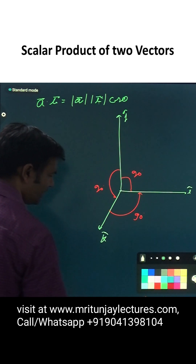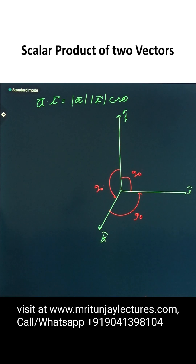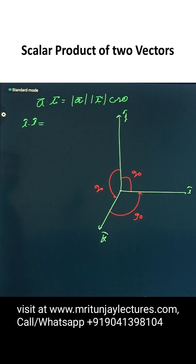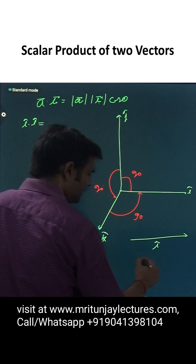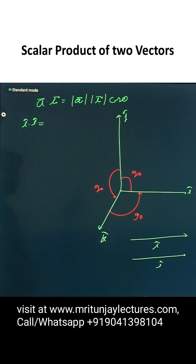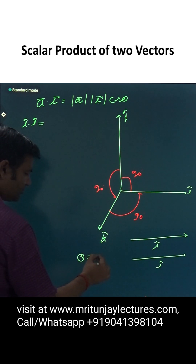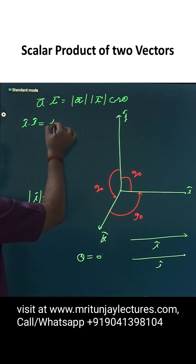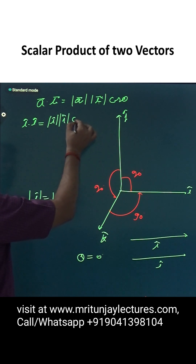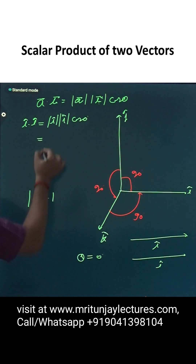Our next target is what about i dot i, i dot j, and j dot k. For i dot i — the angle between i cap and i cap is 0 degrees, and the magnitude of i cap is 1. So, i dot i is written as mod i cap, mod i cap into cos 0 degree, which gives 1 into 1 into 1. Finally, i dot i equals 1.